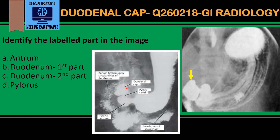That's the second part of the duodenum — the C-loop which surrounds the pancreas. This is the third part of the duodenum, and finally the fourth part which goes on the left side. The first part of the duodenum has a triangle shape — that is the duodenal cap. The arrow here represents the first part of the duodenum.